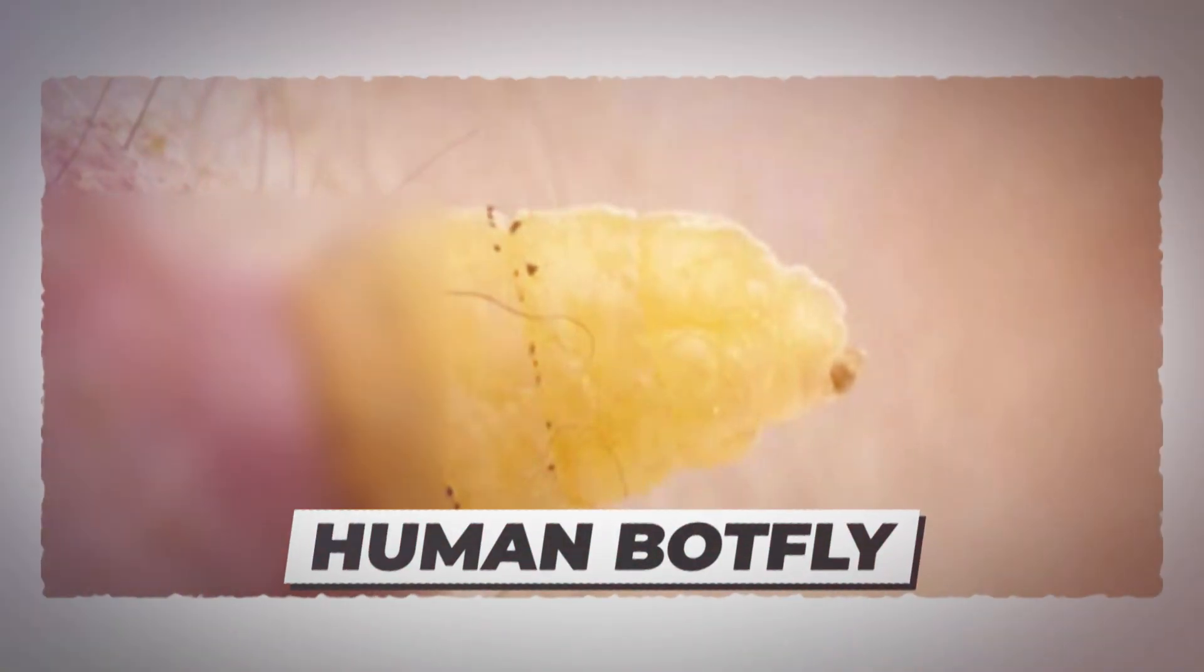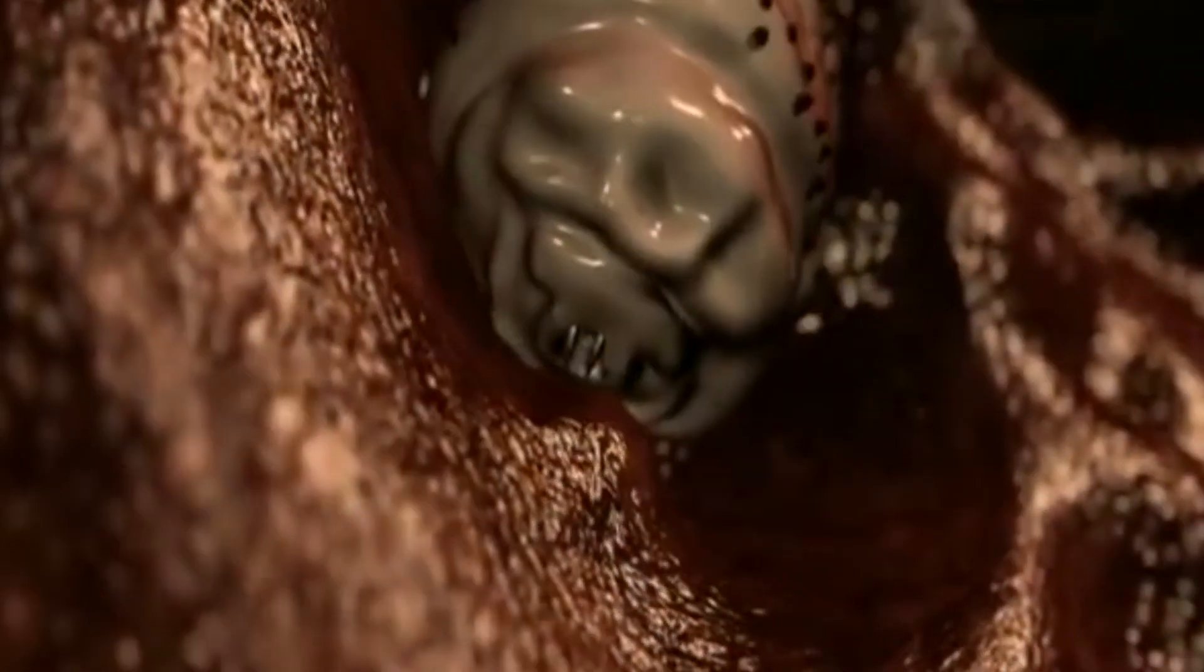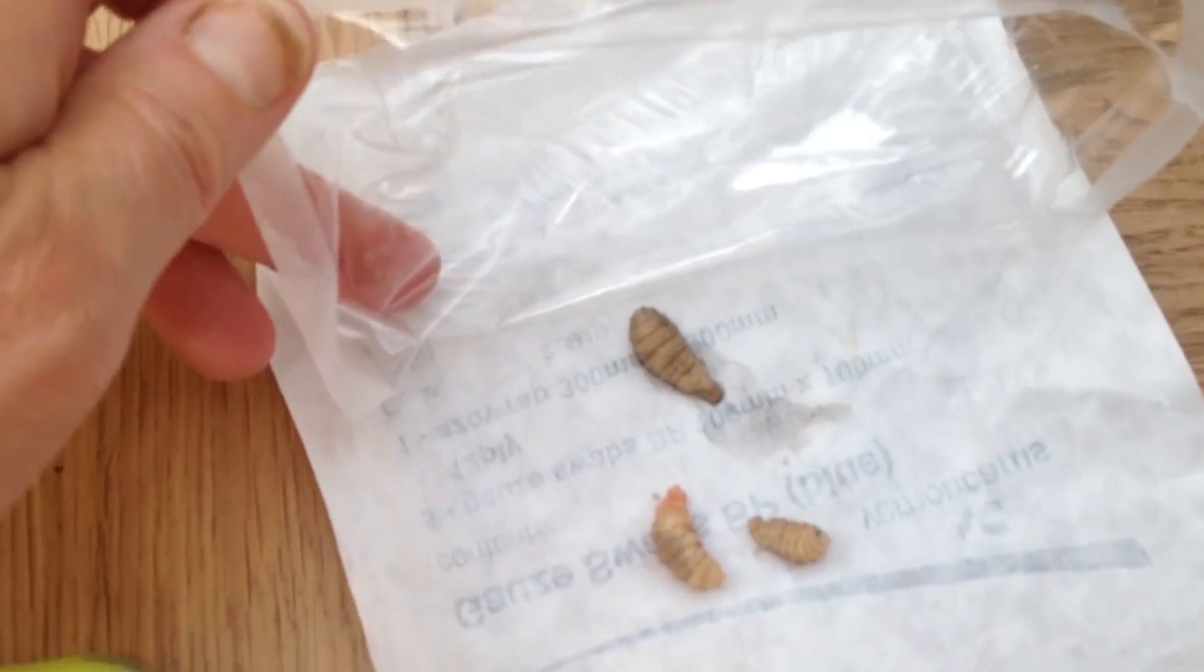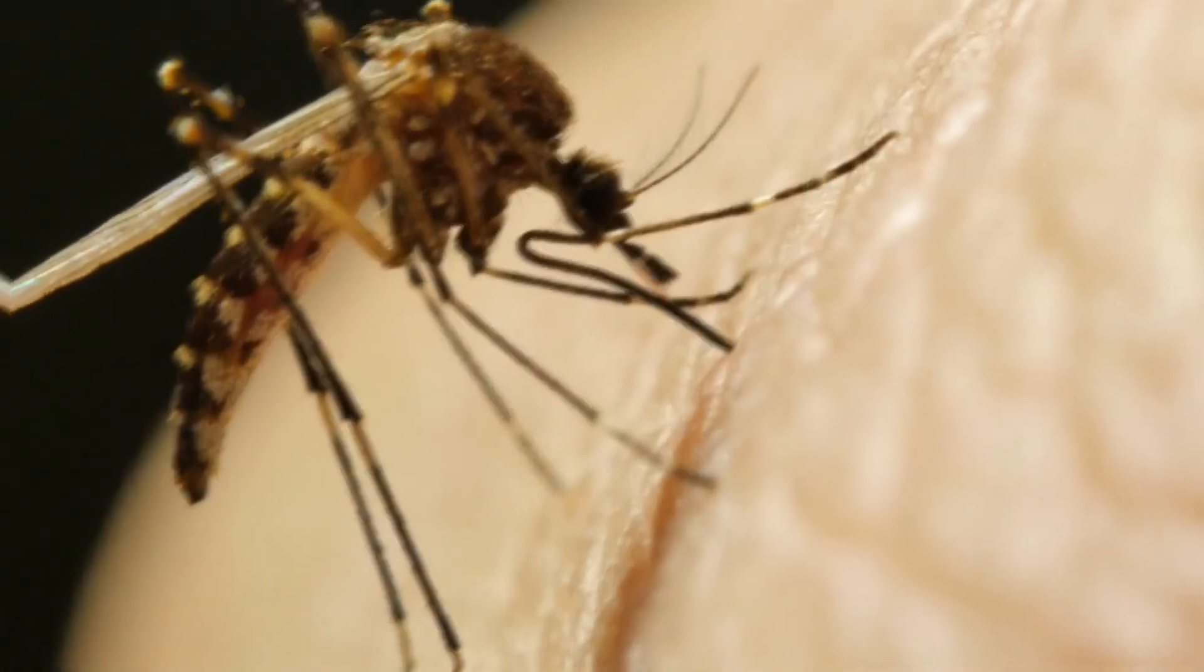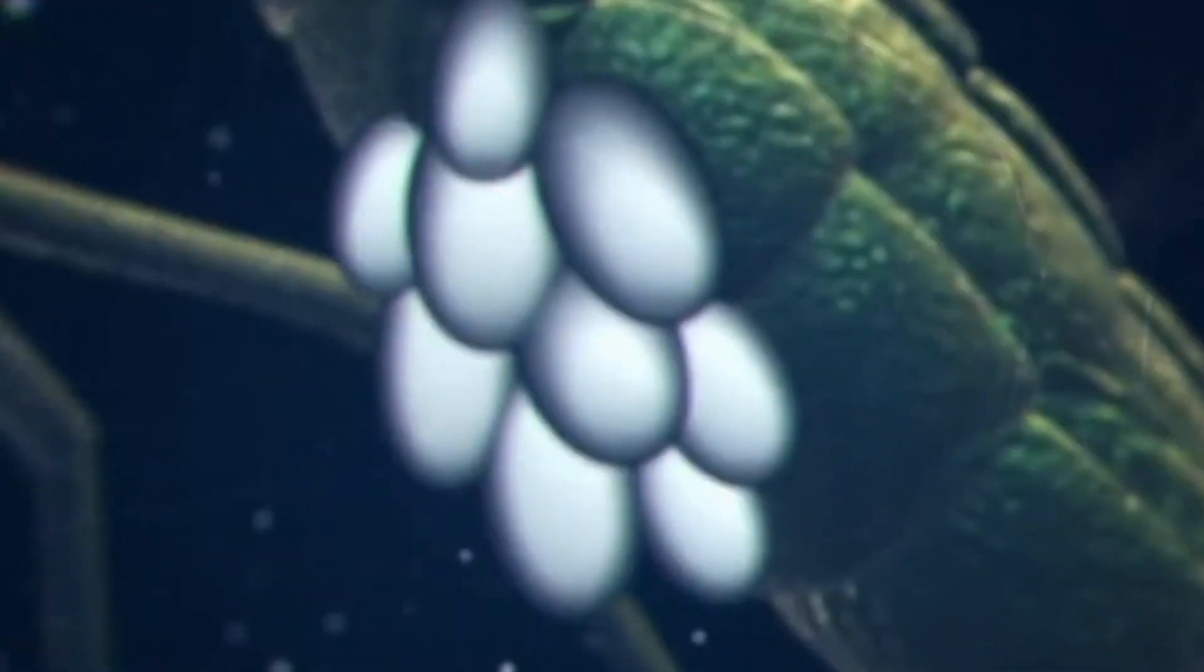Number 10, Human Botfly. The human botfly can be found in the tropical regions of Central and South America and the Caribbean, and is one of the few flies that can cause myiasis, which is a tissue infection by a maggot. Adult botflies attack blood-feeding insects such as mosquitoes or ticks and lay eggs on their bodies in which the larvae grow.